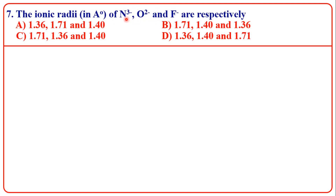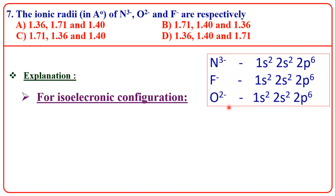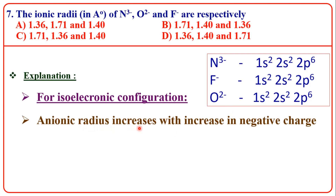Looking at the electronic configuration: all are isoelectronic species — anions. For isoelectronic configuration, anionic radius increases with the increase in negative charge. As negative charge increases, radius increases.